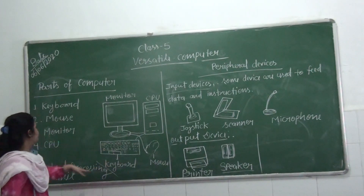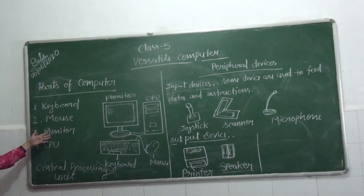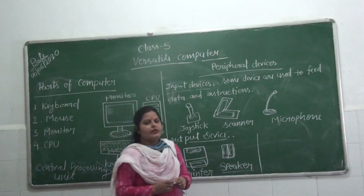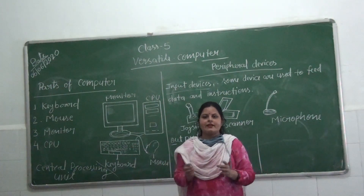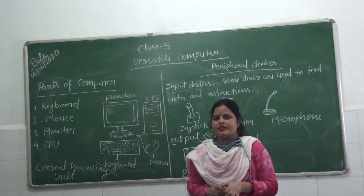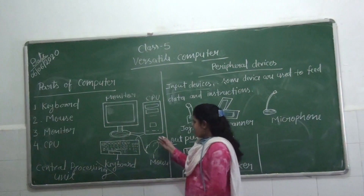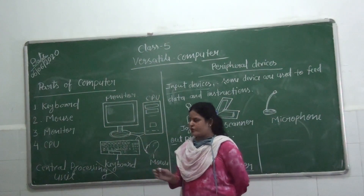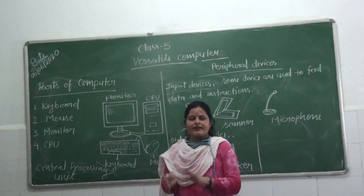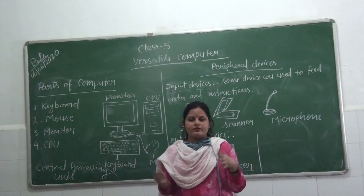So these are the 4 devices of the computer: keyboard, mouse, monitor, and CPU. Now, what is the computer? Computer is an electronic device. It works very fast and accurately. Computer has many uses at home, offices, bank, airport, and many other areas.